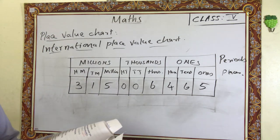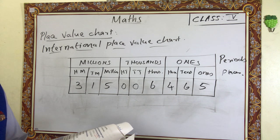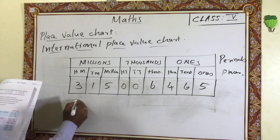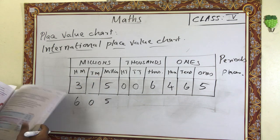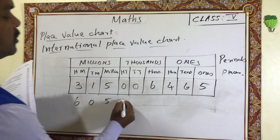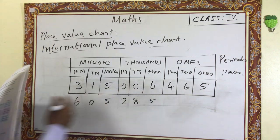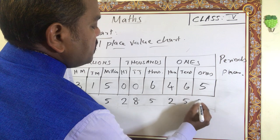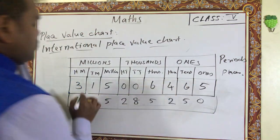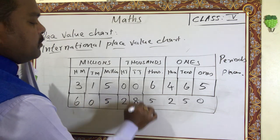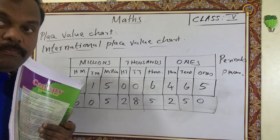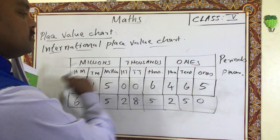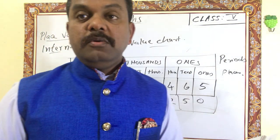One more example: six hundred and five million, two hundred and eighty five thousand. Write six hundred and five in the millions columns, two hundred and eighty five in the thousands columns, and fill the ones columns accordingly. This is how you write number names in the international place value chart — always make the columns first from ones, thousands, and millions, then fill in easily.